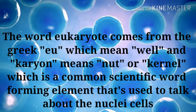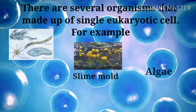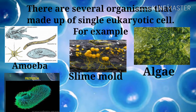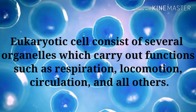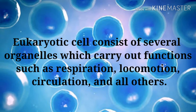There are several organisms made up of a single eukaryote cell — for example, protozoa, slime molds, amoeba, and some forms of algae. Eukaryotic unicellular cells consist of several organelles which carry out functions such as respiration, locomotion, circulation, and others.